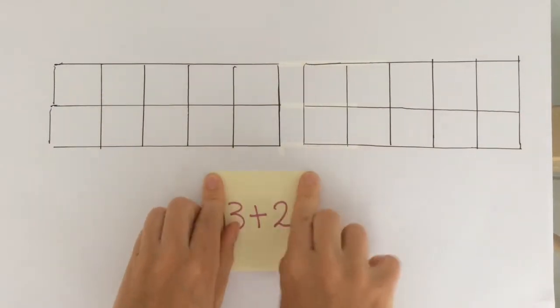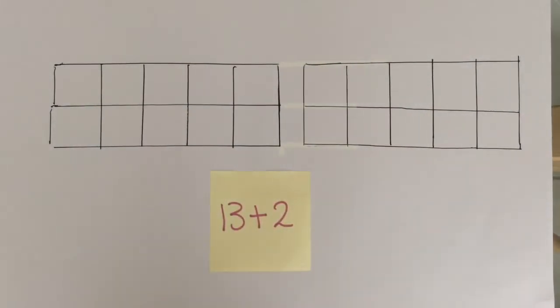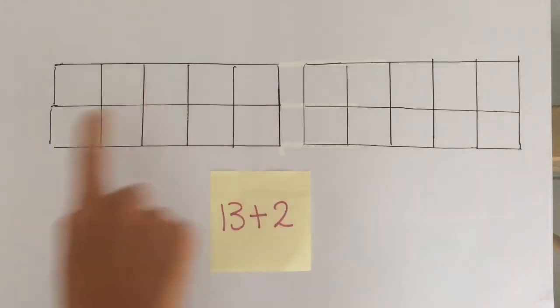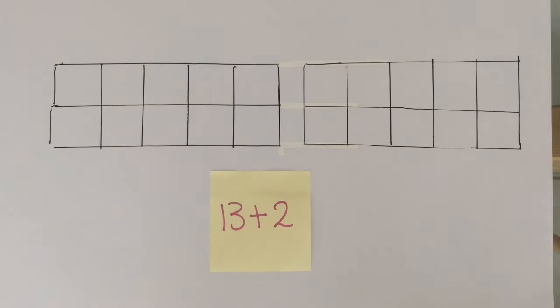Thank you Belle. So when we're adding two quantities together it's always best to start with the largest amount. So in this one that would be 13. Let's count 13 all together.